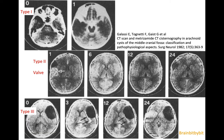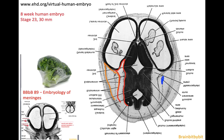Galassi developed a classification of arachnoid cysts evaluating the relationship with the subarachnoid space and ventricular system using CT cisternography. In type 1, contrast was visible one hour after administration, indicating wide communication with the subarachnoid space. In type 2, no contrast appeared at one hour but was present at six hours and gone by 24 hours, suggesting a valve-like mechanism. In type 3, no contrast appeared at three, 12, or 24 hours — no communication with the subarachnoid space.